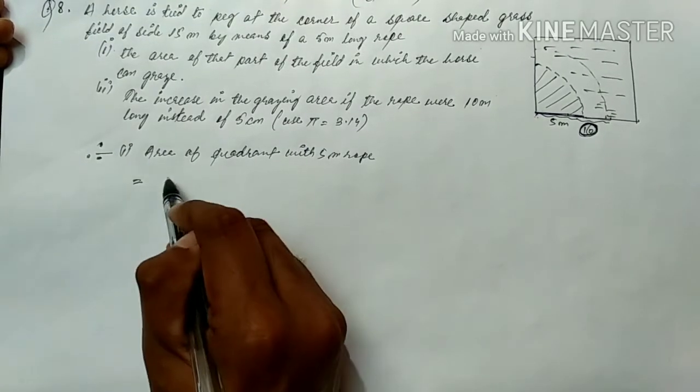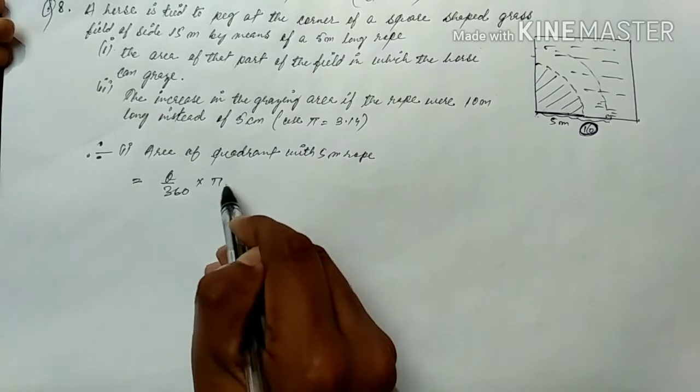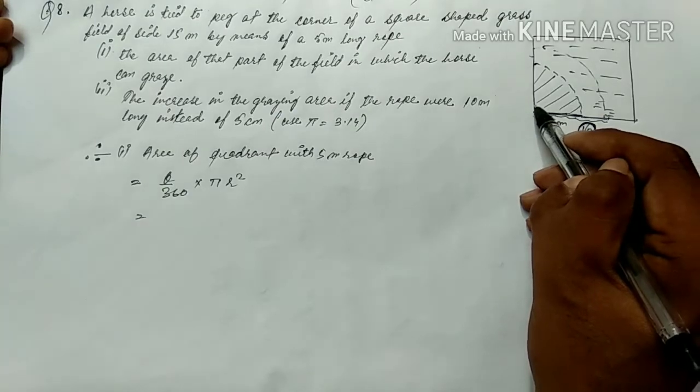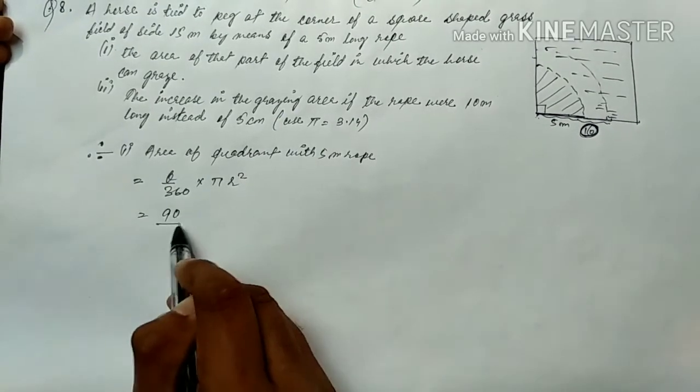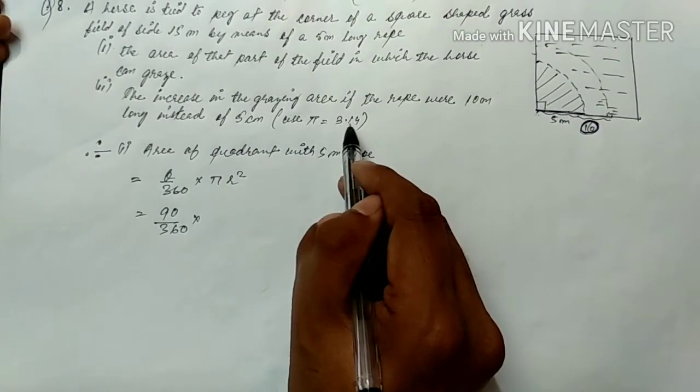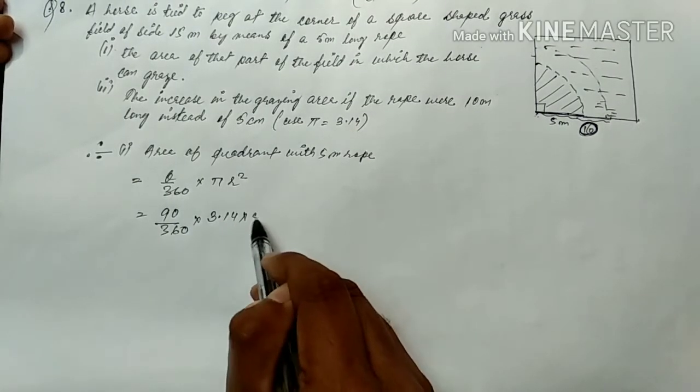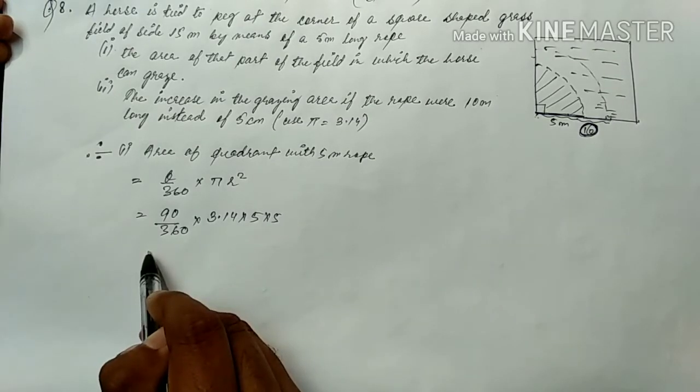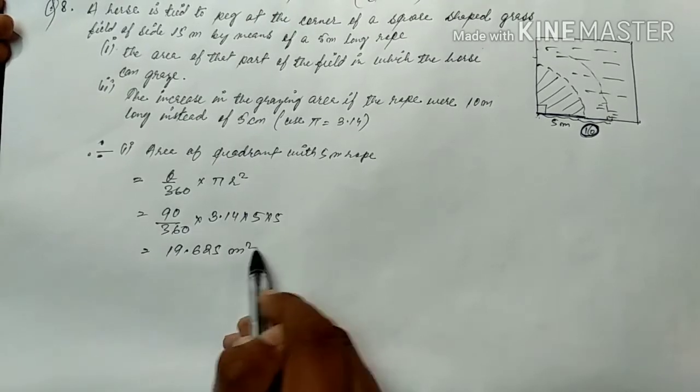In the formula we know that theta by 360 into pi r square. Theta is how much? Now theta, because it is square, it is 90 degrees. Theta will be 90 degrees by 360 into pi value. Now we can multiply 3.14, 5 into pi r square. If we calculate this, this will be 19.625 meters square.